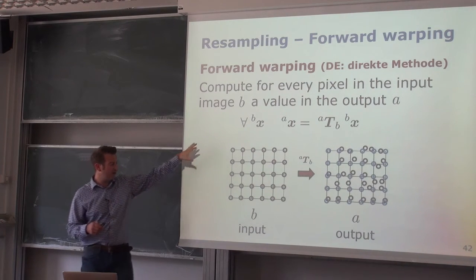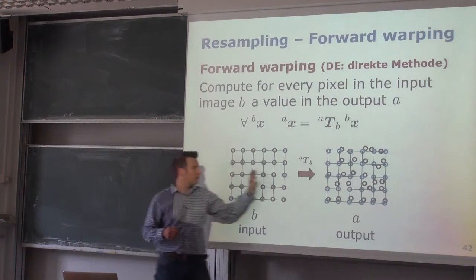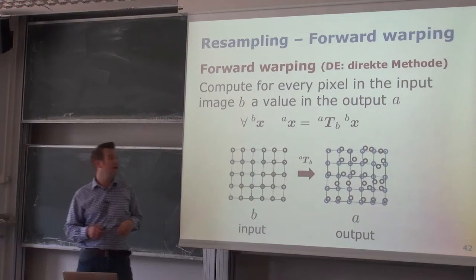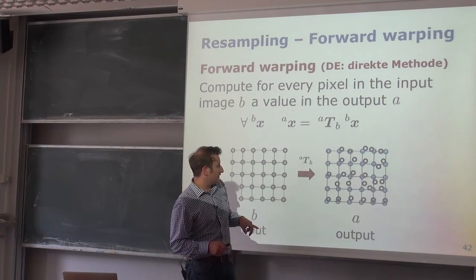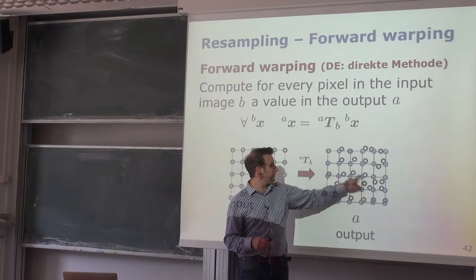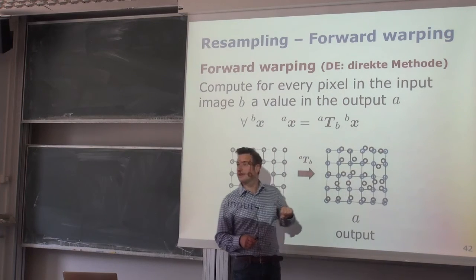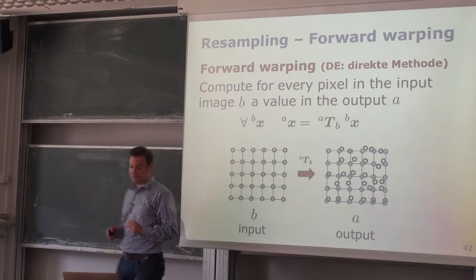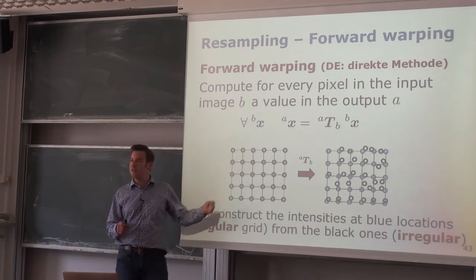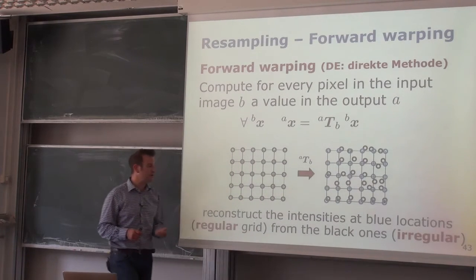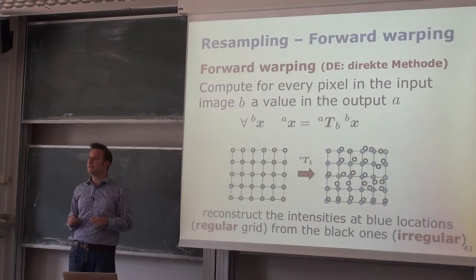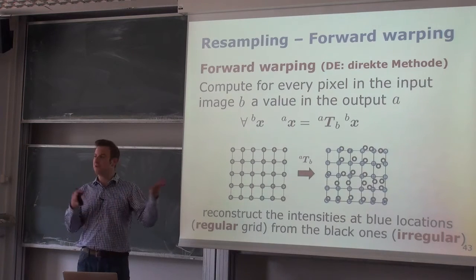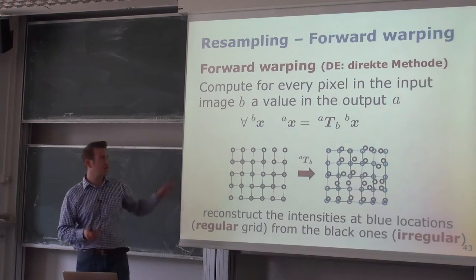In the forward warping technique, for every pixel in the input image, we compute the intensity in the output image. The problem is that depending on the transformation, some areas of the output image may have no input pixels mapped near them — creating gaps. We are reconstructing intensity values at the blue (regular grid) output locations given the black ones, which are irregularly distributed over the image if we have some nonlinear transformation.